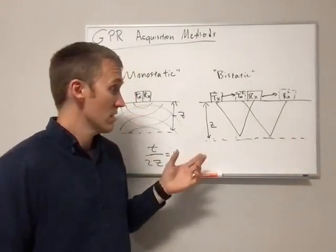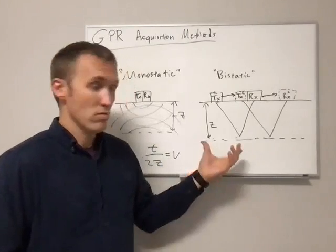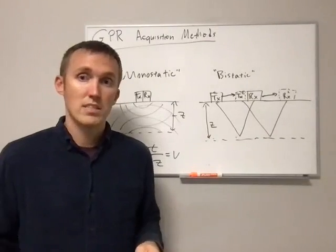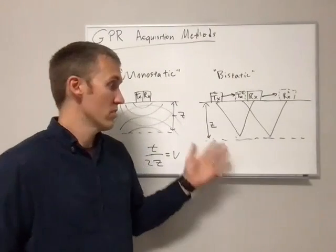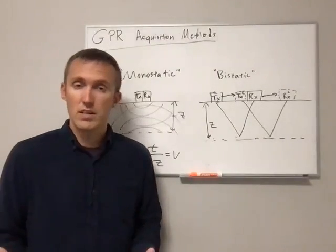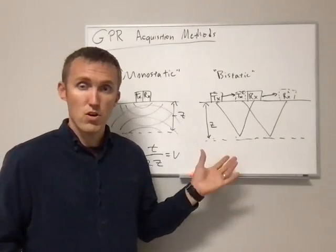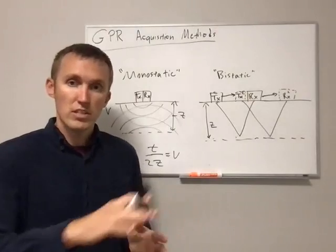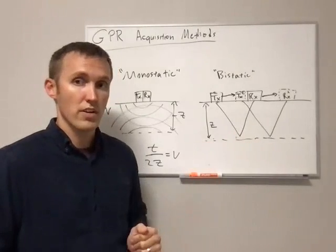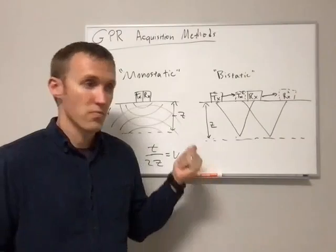With Reflection Profiling we don't get the absolute depth to layer interfaces or absolute velocities like we do with Wide Angle Reflection and Refraction. But we do get relative changes in layer depth. If a reflective layer is changing with depth as we move along, we don't know exactly what the total depth is, but we can trace out how that changes with distance as we go along the survey.